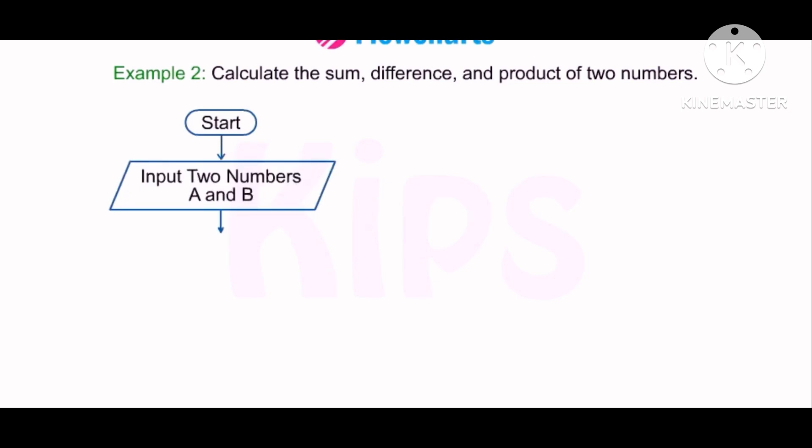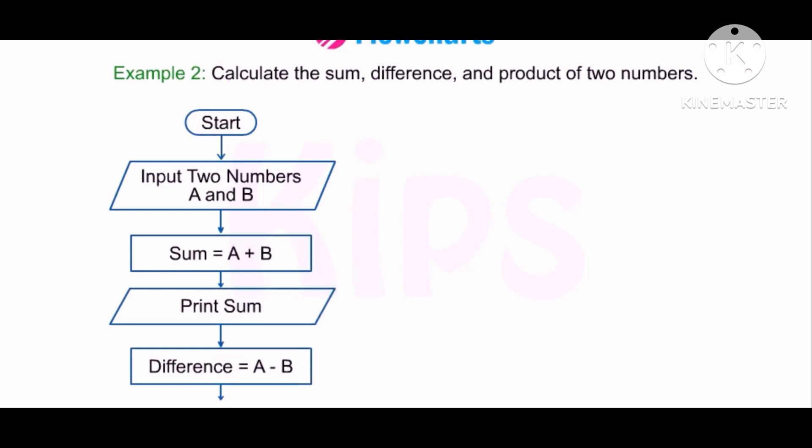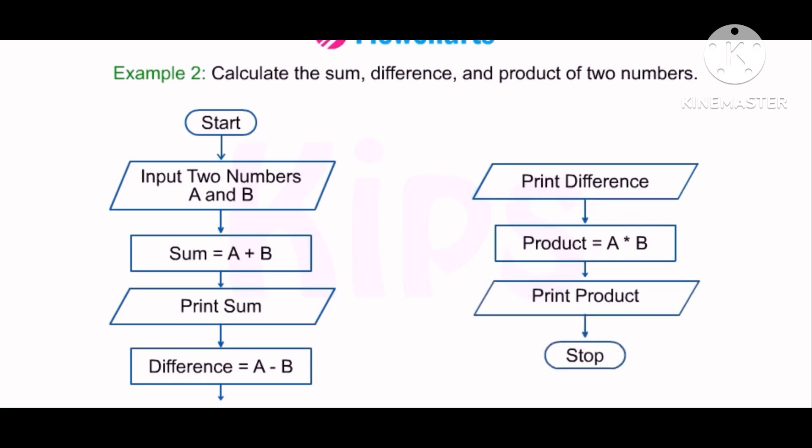Example 2: Calculate the sum, difference and product of two numbers. Start. Input two numbers A and B. Sum equal to A plus B. Print sum. Difference equal to A minus B. Print difference. Product equals to A into B. Print product. Stop.